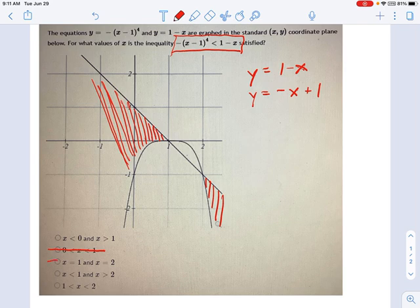We want this one, the fourth down on this list. We want x less than 1, and we want x greater than 2. Those are the two regions that I'm talking about.